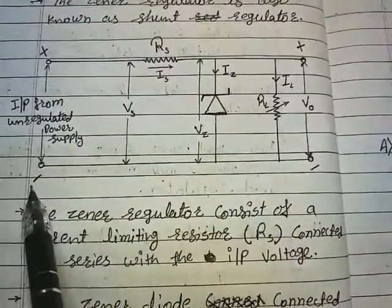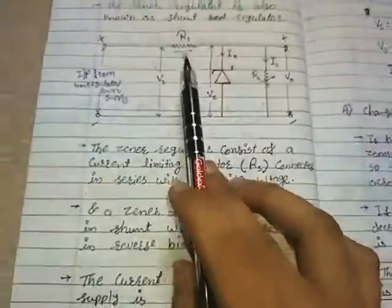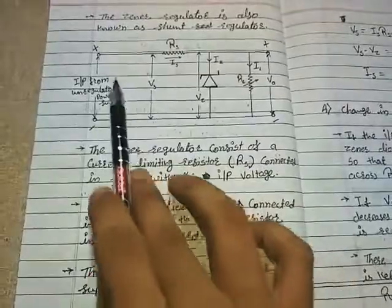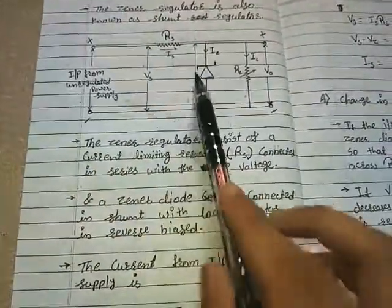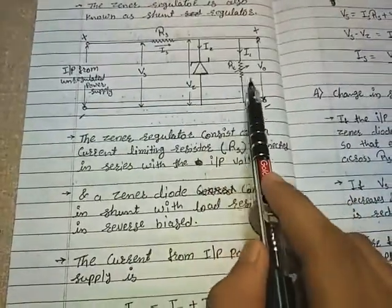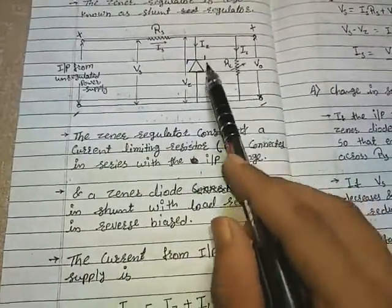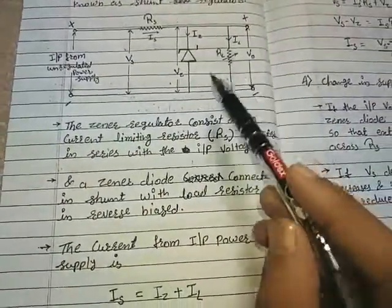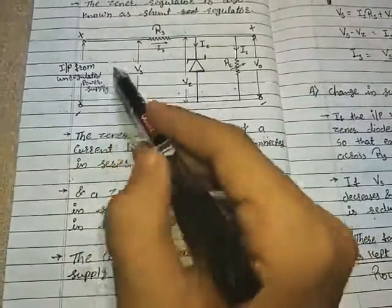The P-end of the diode is connected to negative. RS is connected in series with the output of the filter. The zener diode is connected in shunt with the load resistor, which is mostly a variable type resistor.